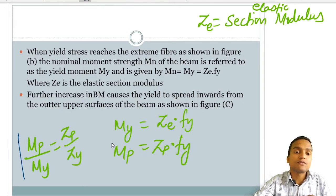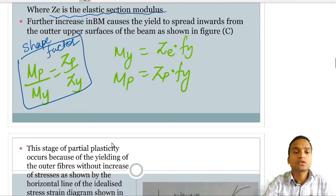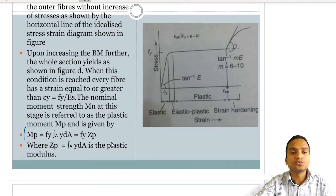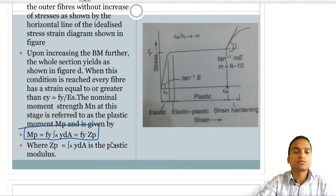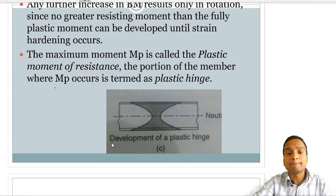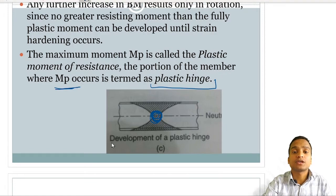The shape factor is always greater than 1 because Mp is always greater than My. Shape factor is a property of the cross-sectional shape and does not depend on material properties. Mp = Fy × Zp is proven from the equilibrium of the plastic section. The maximum moment Mp is called the plastic moment of resistance, and the portion of the member where Mp occurs is where a plastic hinge forms. That portion now acts as a plastic hinge in the beam.